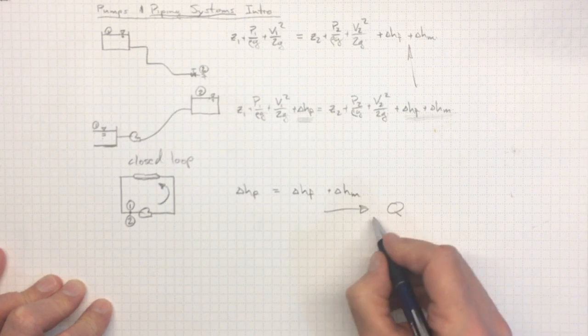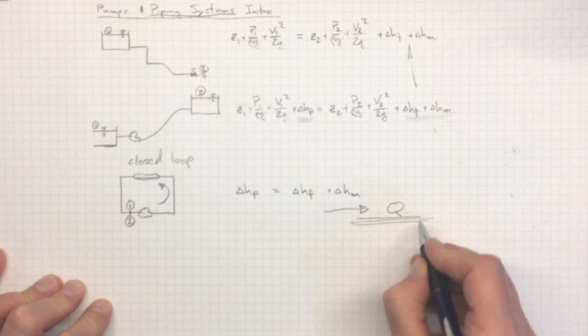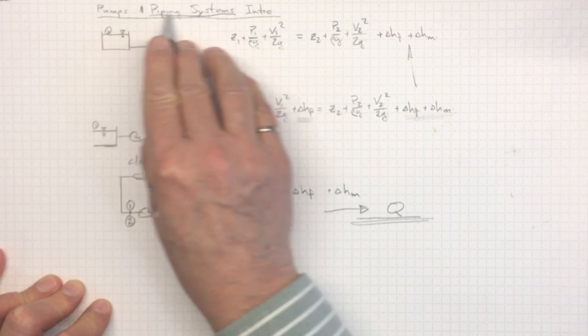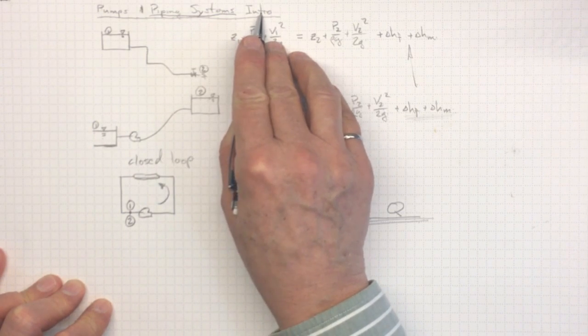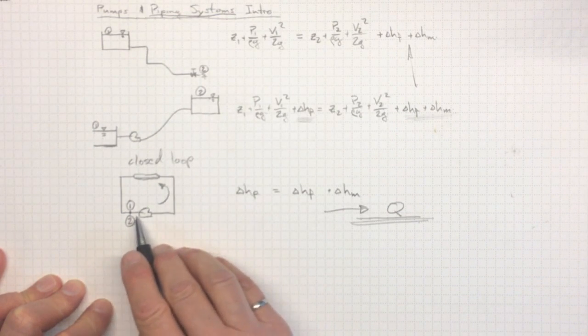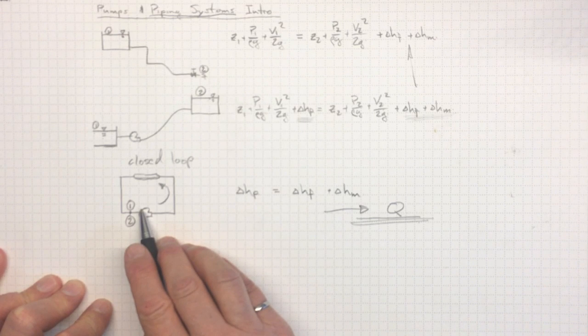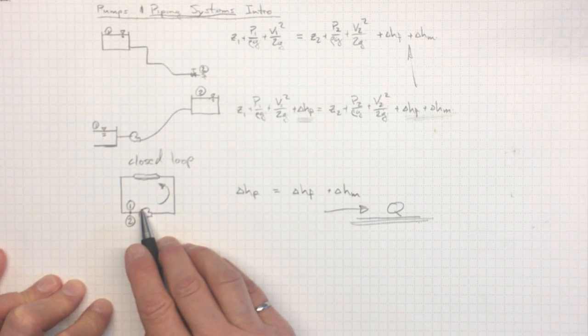So we'd like to be able to predict that. The target of looking at pumps and piping systems in combination is to be able to figure out the flow characteristics that you'll get when you combine the components and operate them in a practical system.